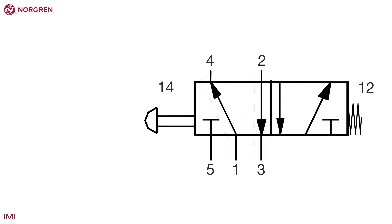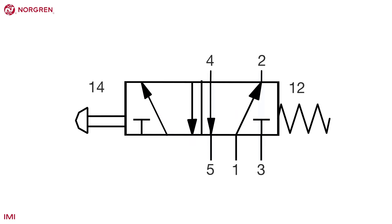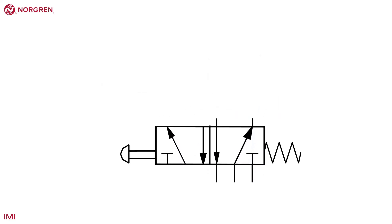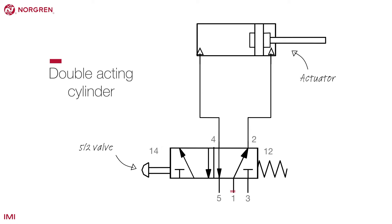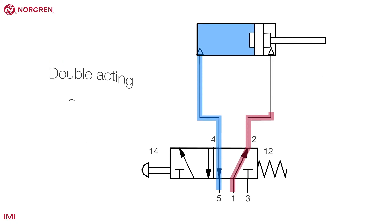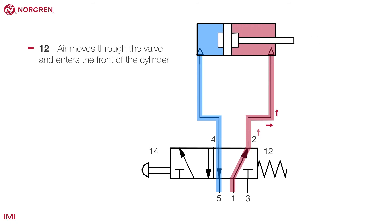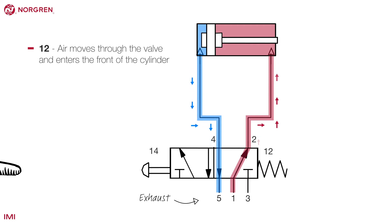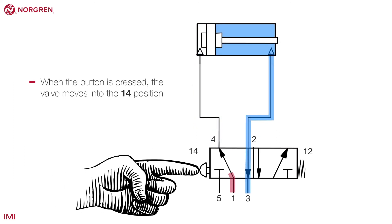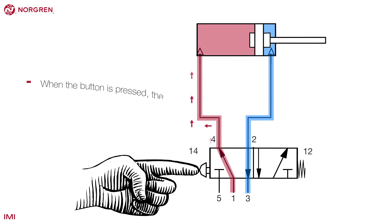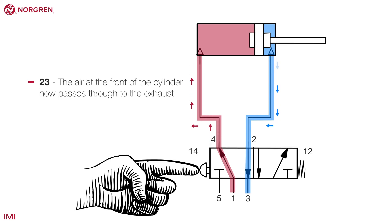A 4-2 valve is less common — these valves are similar to a 5-2 valve but share an exhaust port. Here is a diagram demonstrating a 5-2 valve operating a double-acting cylinder. In the 1-2 position, air moves through the valve and enters the front of the cylinder, pushing it inwards. Air from the back of the cylinder enters port 4 and is vented through port 5, the exhaust. When the button is pressed, the valve moves into the 1-4 position; air travels from port 4 to the back of the cylinder, pushing it forwards, and the air at the front passes back through port 2 and out of the exhaust at port 3.